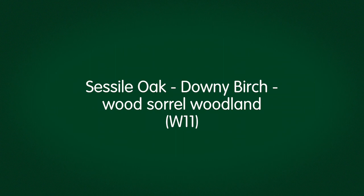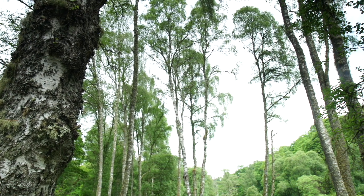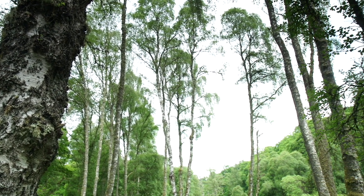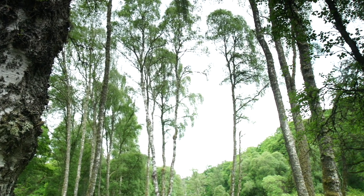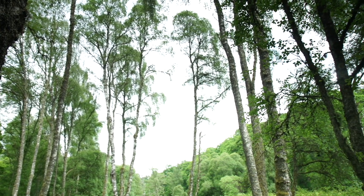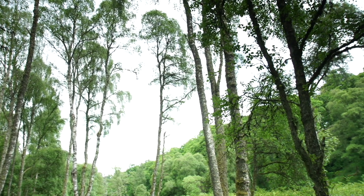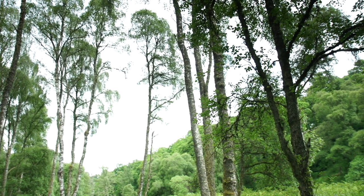In eastern Scotland, silver birch often dominates although downy birch is usually present in the wetter and higher parts. Woods here are often found on more acidic, leached brown earth soils. Growth is stronger with more potential for straight, tall trees.